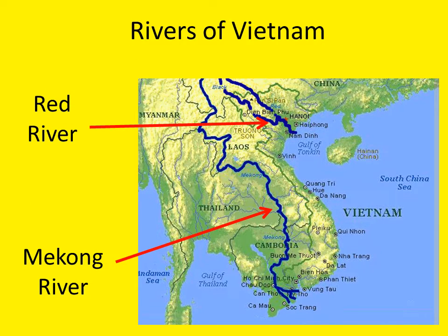There are two rivers that played especially important roles in Vietnam's history. The Red River is a relatively short river at about 700 miles in length. Its source is in southern China. The Red River flows through the Vietnamese capital of Hanoi — actually, Hanoi is on the right bank of the river, so it doesn't technically flow through it — but it empties into the Gulf of Tonkin. Each year, the Red River Delta expands a few dozen yards into the Gulf of Tonkin due to the sediment carried by the Red River.